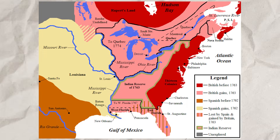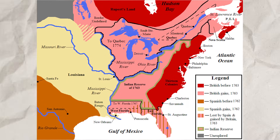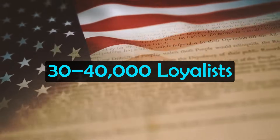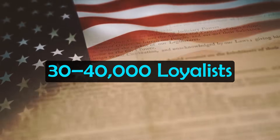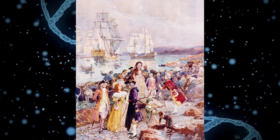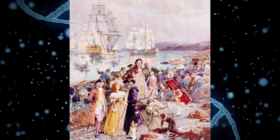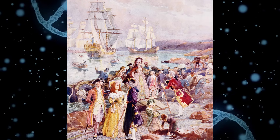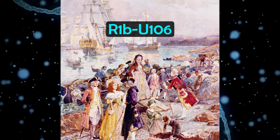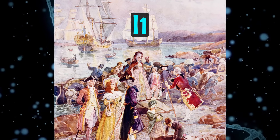This British period brought more European genetics into Canada, which had a similar genetic profile to the French. After the American Revolution, about 30,000 to 40,000 loyalists — American colonists loyal to Britain — moved to British Canada. These loyalists added not only British-derived genes but also some German, Dutch, and other Northern European lineages. This introduced higher levels of Y-DNA haplogroups such as R1B-U106, associated with Germanic ancestry, as well as I1, common in Northern Europe and Scandinavia.